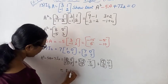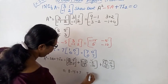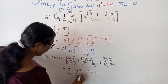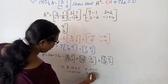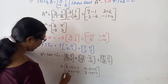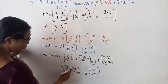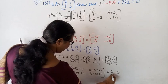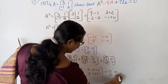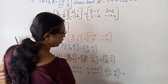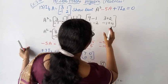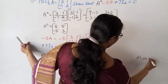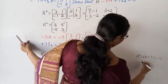Adding all entries: -15 + (-5) + 7 = 0 for the first entry. 5 - 5 + 0 = 0. 3 - 10 + 7 = 0. All entries give zero. So the left hand side equals the right hand side, which is zero. Therefore A squared minus 5A plus 7I₂ equals zero. Hence proved.